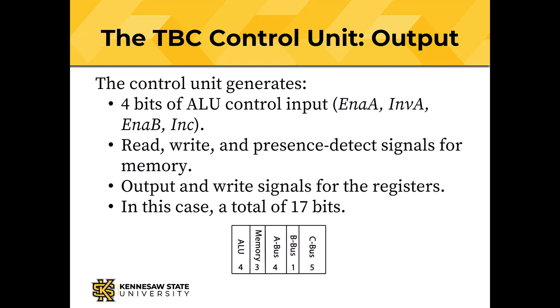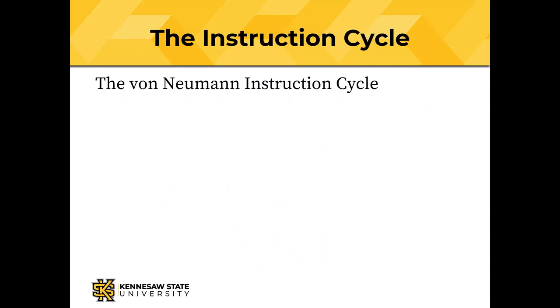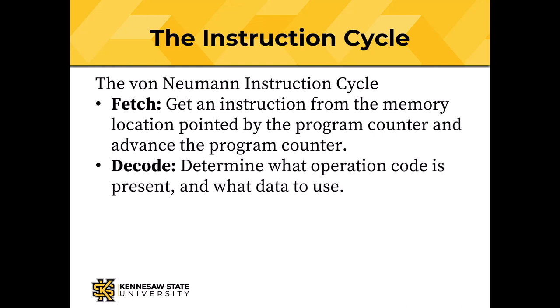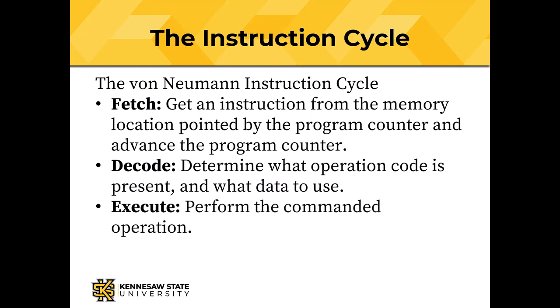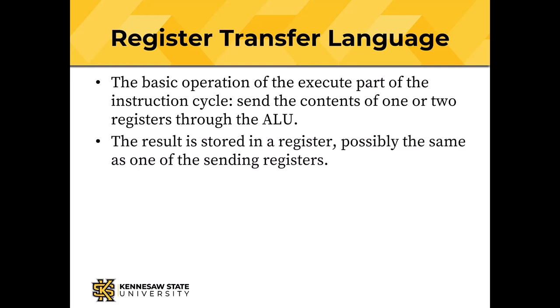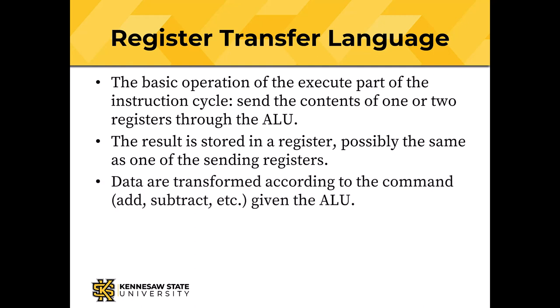Remember that the von Neumann instruction cycle is fetch, decode, and execute. Fetch gets an instruction from the memory location pointed by the program counter and advances the program counter. Decode determines what operation code is present and what data to use, and execute performs the commanded operation. Instead of drawing pictures of the data path, we can use register transfer language (RTL) to represent what's going on. The basic operation of the execute part is to send the contents of one or two registers through the ALU, and the result gets stored in a register. Data are transformed according to the command sent to the ALU — add, subtract, and so on. The copy command can move data through the ALU without changing it.